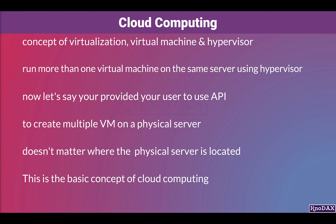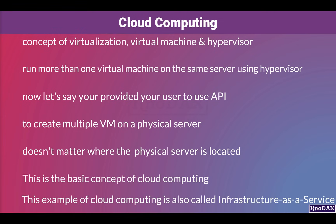This particular example of cloud computing is also called Infrastructure as a Service. On the same token, cloud providers provide APIs to access different types of services such as infrastructure, storage, and databases over the internet — it doesn't matter where the service is. This is what cloud computing is in a broad, general way.